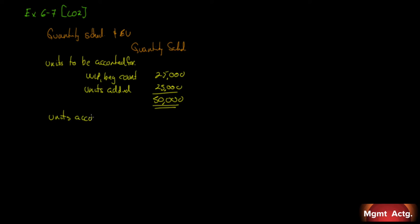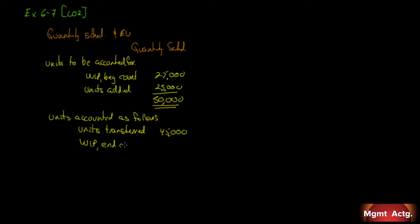Units accounted for as follows. We start with units transferred — and we're told 45,000 units were transferred during the month. If 45,000 units were transferred, our work in process ending count, we're told, is 5,000 units, for a total of 50,000 units. These two numbers should equal each other. There is your quantity schedule.